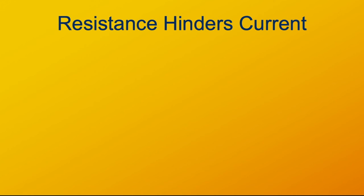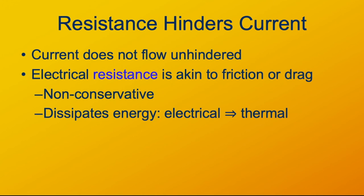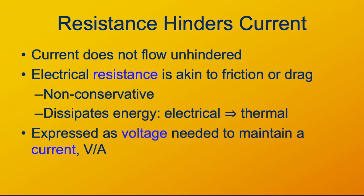To quantify how poor a conductor something is, we have a quantity known as resistance. There is always some hindrance to current flowing through a conductor or through any material — we refer to that hindrance as the resistance. It's kind of like friction or drag: if you're trying to push a box across a surface, different surfaces will have different amounts of resistance. We have the same idea for electrical current. Resistance is essentially providing a non-conservative force on the charges, dissipating energy by turning the kinetic energy of the moving charges into heat. In the case of an incandescent light bulb, it's heating up the filament, which causes it to glow. We quantify resistance in terms of the voltage it takes to maintain a current.